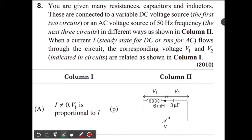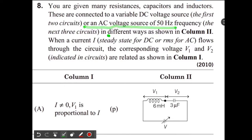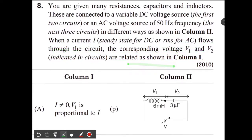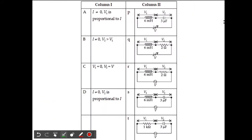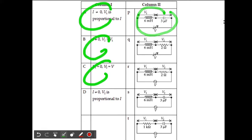This is a matrix type question from IIT JEE Advanced 2010. You are given many resistances, capacitors and inductors, connected to a variable DC voltage source or an AC voltage source of frequency 50 Hz in different ways as shown in column 2. When a current I — steady state for DC or RMS for AC — flows through the circuit, the corresponding voltages V1 and V2 are related as shown in column 1. I like to go from column 2 to column 1, since column 2 gives the circuit situation, and I will solve these circuits one by one to match the options.